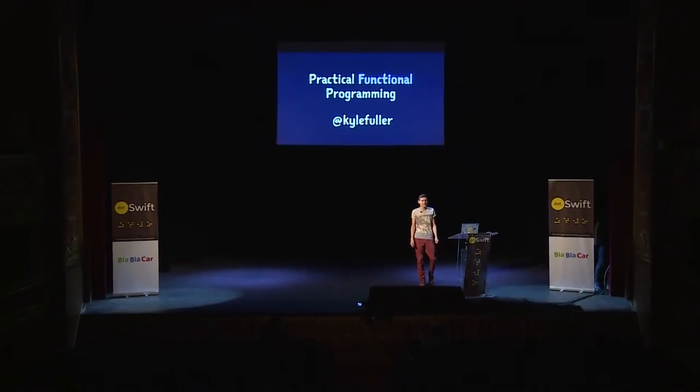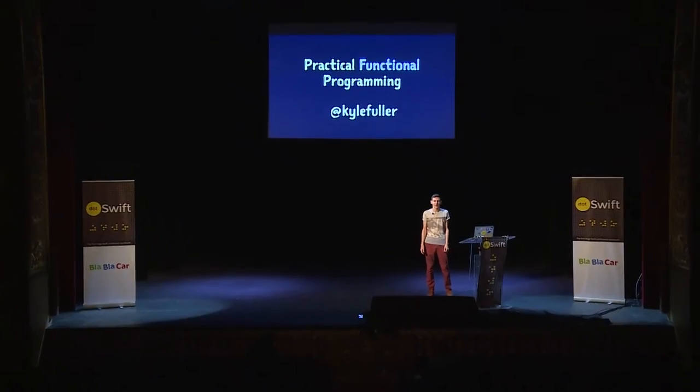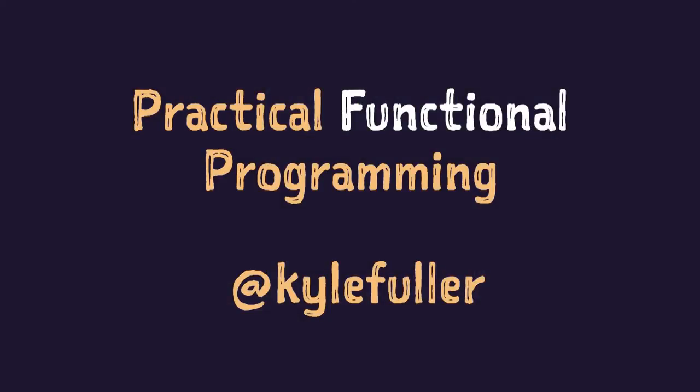Hello, everyone. Today I'm going to be giving you an introduction to functional programming in a practical way. We're going to cover what being functional means and how it allows us to write clearer, declarative, and testable code. Usually functional programming is taught with abstract functional techniques. I'm going to go for a slightly different approach, and we're going to talk about examples of imperative code and declarative code — how unfunctional code people may have written in the past — and how we can translate to a functional style.